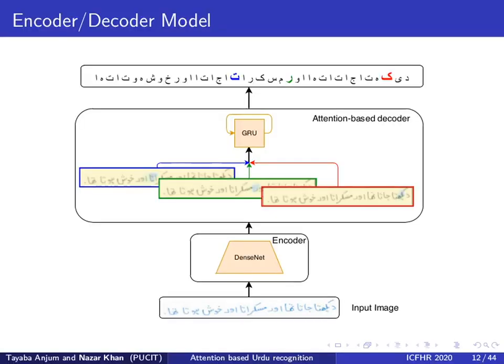Let us now discuss our attention-based method for offline Urdu handwritten text recognition. We use an encoder-decoder framework. An image containing handwritten text is passed as input into a DenseNet encoder. Extracted features, or encodings, are passed through a gated recurrent unit that attends to specific image regions in order to produce probabilities of output characters at every time step. These probabilities are finally decoded into output characters using beam search.